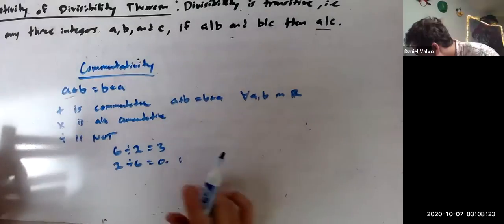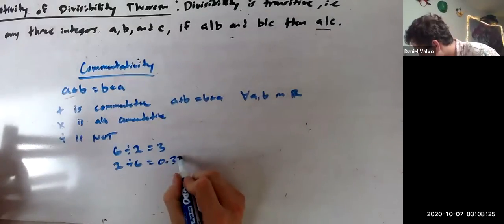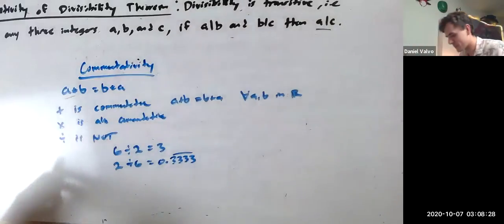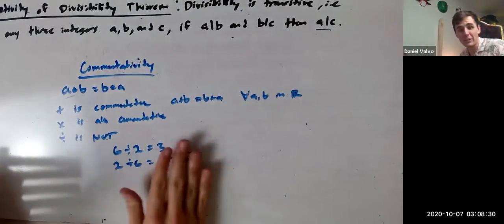2 divided by 6 equals 0.33333. Oh my gosh. Thank you Alex, yes. All right, yeah, so not the same thing.